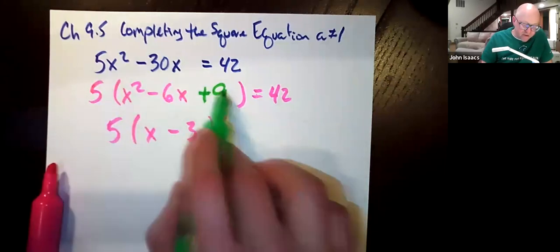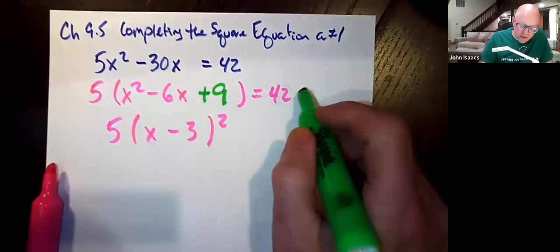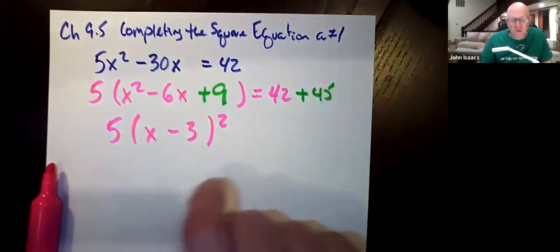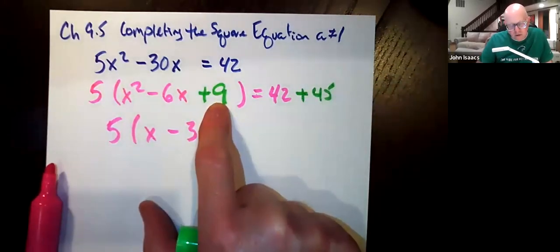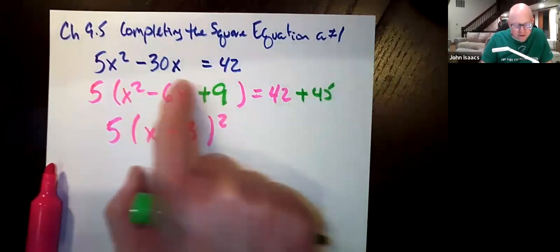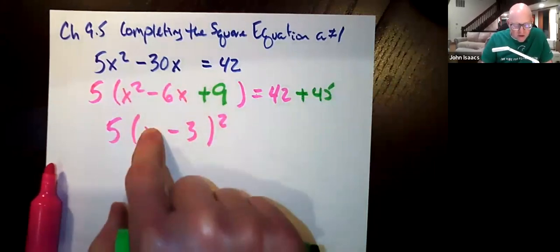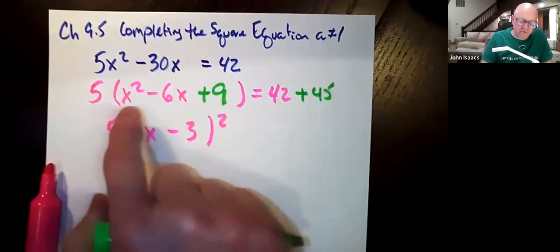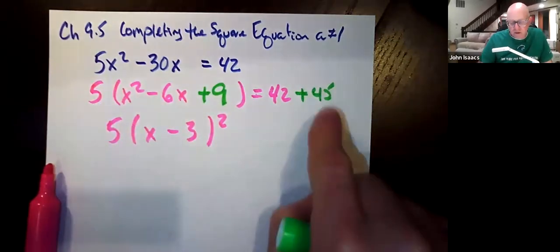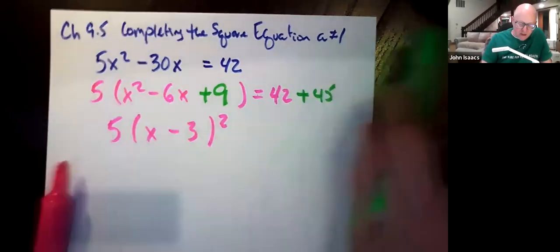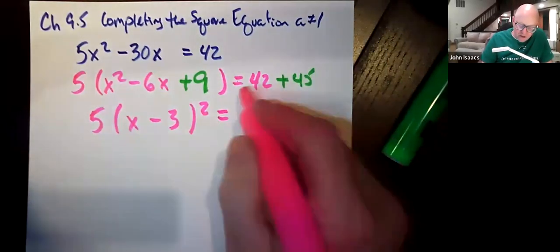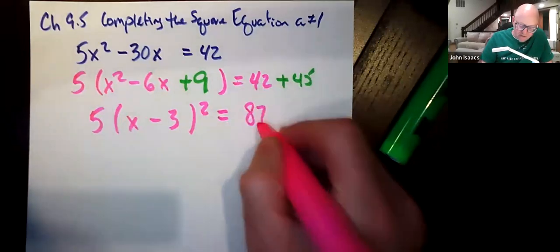we're actually adding 45 to this side of the equation. So that's how we balance it over here with another 45. We're not adding 9 here, 9 is what completes this nice little perfect square. But what's really getting added to this left side of the equation is 5 times 9. So that's where the 45 comes from, and we have this equation equal to 87.